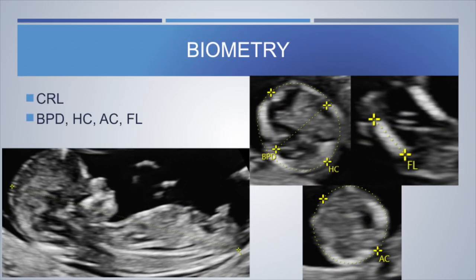Regarding biometry, we generally measure BPD, HC, AC, FL, and of course the CRL. CRL measurement is taken in the mid-sagittal plane, measuring from head to rump — the maximum measurement is recorded.